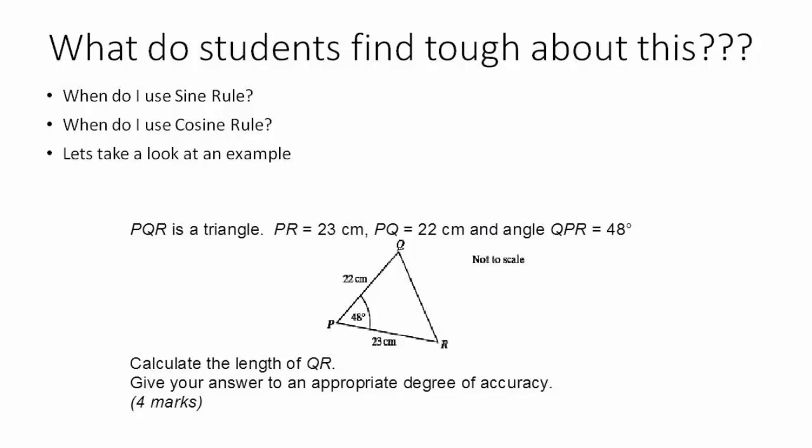If you ignore the c over sine c part of the sine rule, then you'll see that the sine rule has two lengths and two angles in it. So if you know two lengths and an angle which is opposite one of those lengths, you can find an angle opposite the other length. Likewise, if you know one length and two angles and one of those angles is opposite the length you know, then you can find out the other length opposite the other angle you know, and that's when you'll be using sine rule.